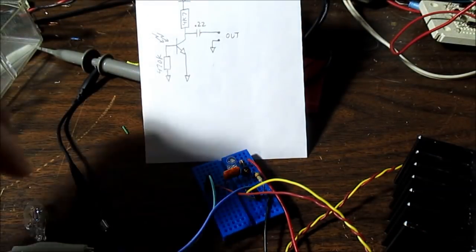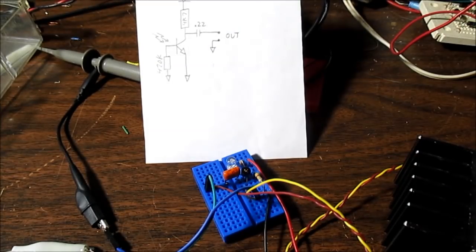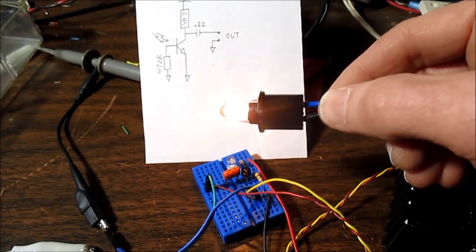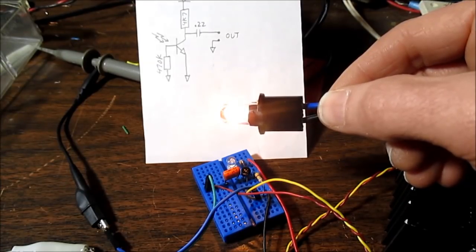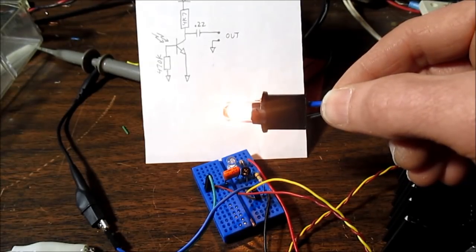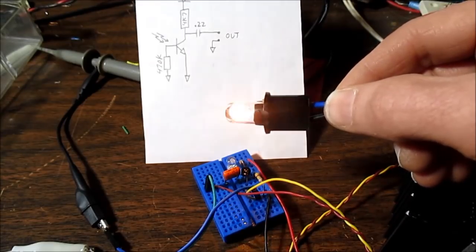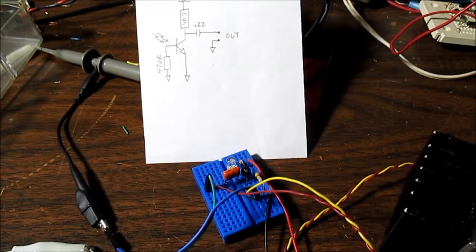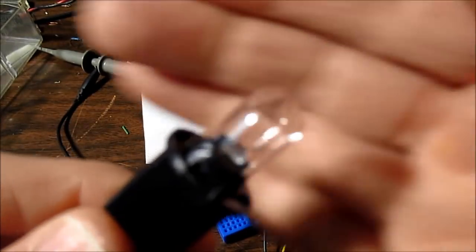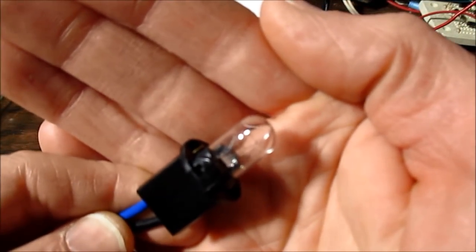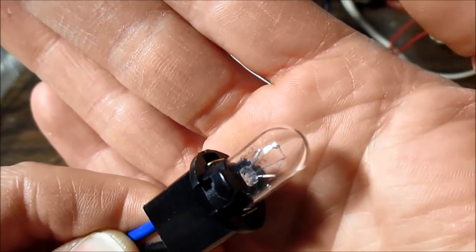Now let's try the 2 watt one. I have to put that one a lot closer. That seems to have about the same response as the 5 watt bulb did. It all depends on the filament — how heavy the filament is inside. This camera likes to be a little laggy with the focus.